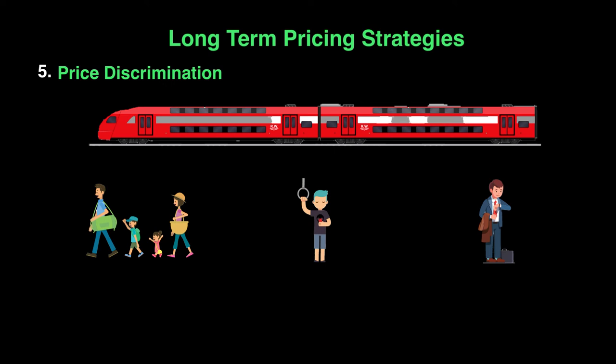The last of our long-term pricing strategies is what we know as price discrimination. As you know, the word discrimination means treating people differently. When we talk about price discrimination, we mean that different consumers will be charged different prices for the same product.